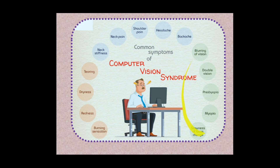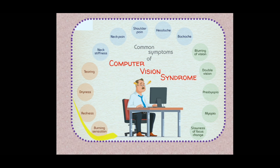Not only the eye — computer vision syndrome may cause damage to other parts of the body as well: neck stiffness which may result in spondylitis, neck pain, shoulder pain, headache, and backache. Other symptoms include tearing, dryness, redness, and burning sensation related to muscles — stiffness or burning felt while sitting for long periods or lying in a sofa watching devices.